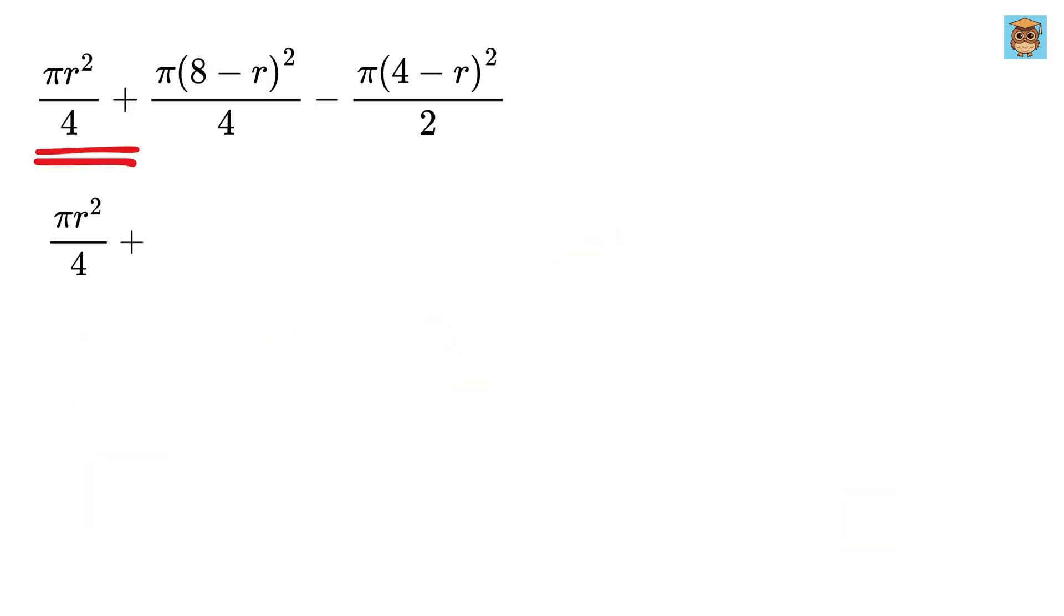Write it as it is. Now, expanding this gives us 64 plus r square minus 2 times 8, or 16r. Now, expanding this gives us 16 plus r square minus 2 times 4, or 8r.